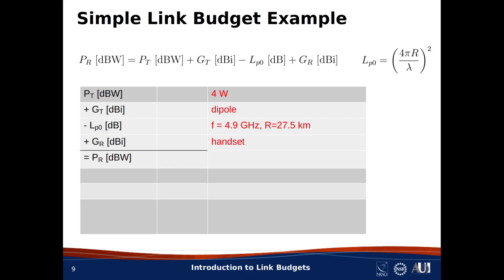In this example, we'll say the transmit power is 4 watts, as shown in the table. We'll assume the transmit antenna is a vertically oriented dipole, which gives us an omnidirectional pattern in azimuth. For path loss, we need to know wavelength and distance. The frequency is 4.9 GHz, so the wavelength will be about 6.1 centimeters.